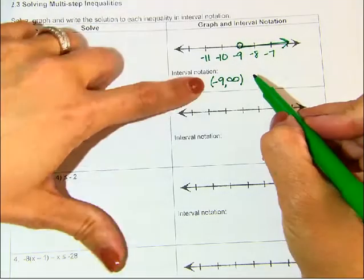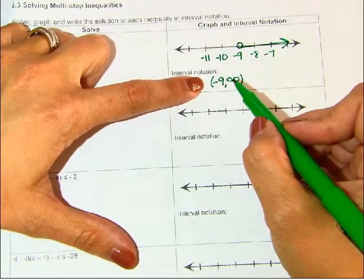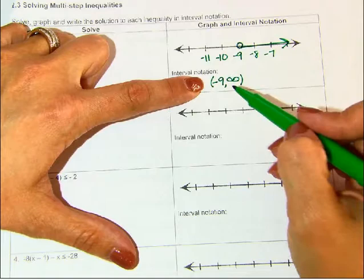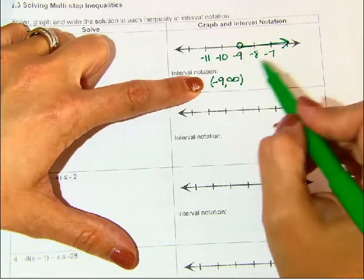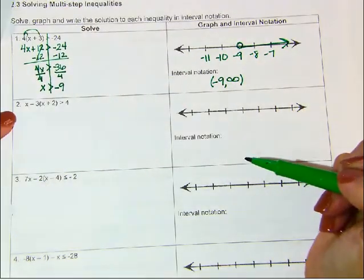Now, if I were to give you this, you'll get good enough at these interval notations, hopefully, that you'll be able to just draw this graph based on that information. So let's solve this one.